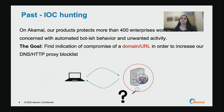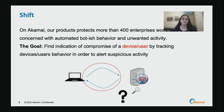At Akamai, our product protects more than 400 enterprises worldwide. The enterprises are concerned with automated bot-like behavior and unwanted activity that is risking the enterprise. The more traditional solution for protecting enterprises is to find indication of a compromised domain or URL. In such a way, you can maintain a blacklist and block instances of an enterprise device accessing a malicious domain. However, lately we see a shift where there are attempts to find indication of a compromised device by tracking its behavior, in order to alert the enterprise admin about suspicious activity happening in the enterprise network.